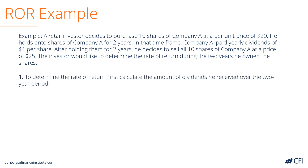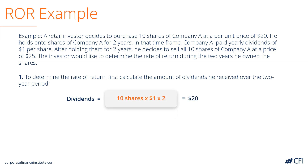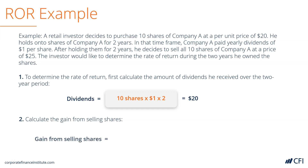To find the rate of return, we need to first calculate the dividends the investor received over the two-year period. The dividends are calculated as 10 shares times $1 dividend times 2 years, equaling $20 over the period. Then we need to calculate the gain from selling the shares, calculated as 10 shares times $25, equaling $250.